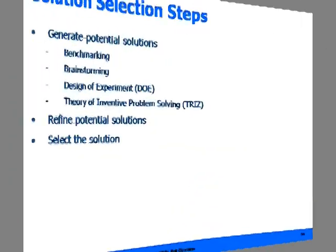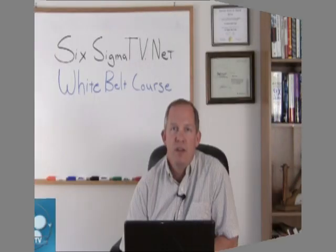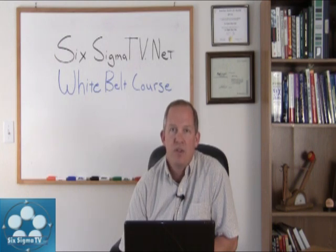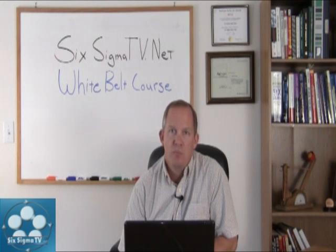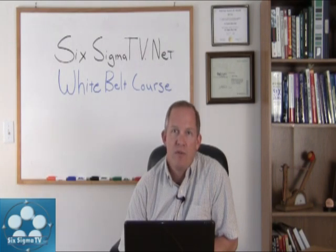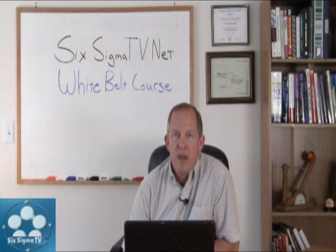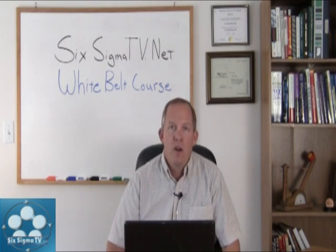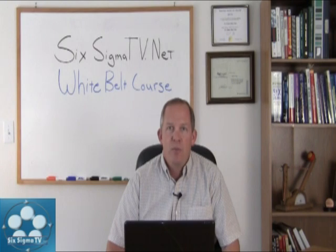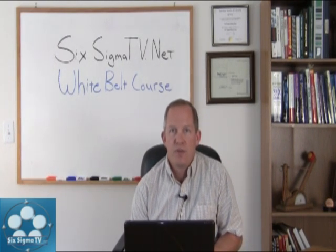Solution selection steps: first, generate potential solutions. We can use benchmarking, brainstorming, design of experiments, theory of inventive problem solving, and also Poka-yoke, where we go in and mistake-proof the process — sometimes called dummy proofing — so that it will just happen without errors. Then we refine these potential solutions, determine which ones to keep, maybe combine elements from different ideas, and develop the best solutions to address the root causes. Finally, we select the solution or solutions that will make the biggest impact on our process improvement efforts.